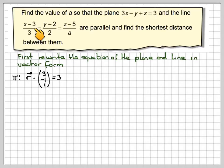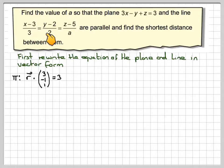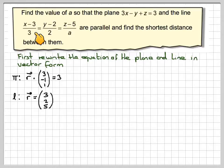For the line, written in this symmetric form, it goes through the point (3, 2, 5) and has a directional vector of (3, 2, a). So the line can be written as the position vector (3, 2, 5) plus some parameter lambda times (3, 2, a).